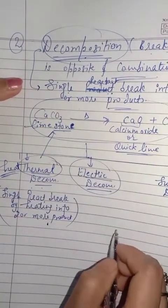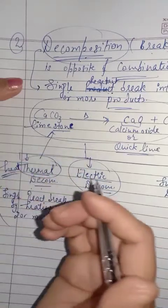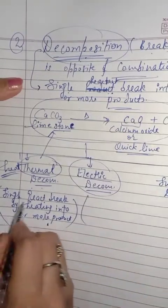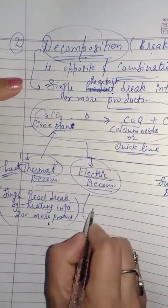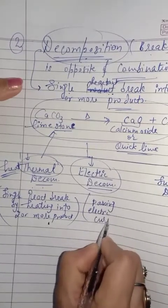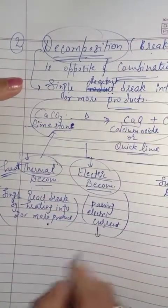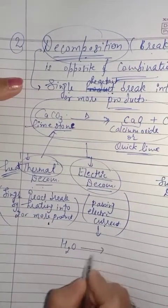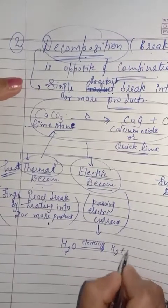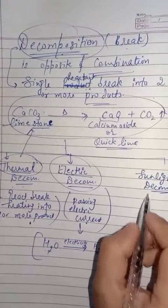In electric decomposition, electric current is applied. A single reactant breaks into two or more products by passing electric current — this is called electric decomposition. For example, when electricity is passed through water, it breaks down into hydrogen and oxygen gases.